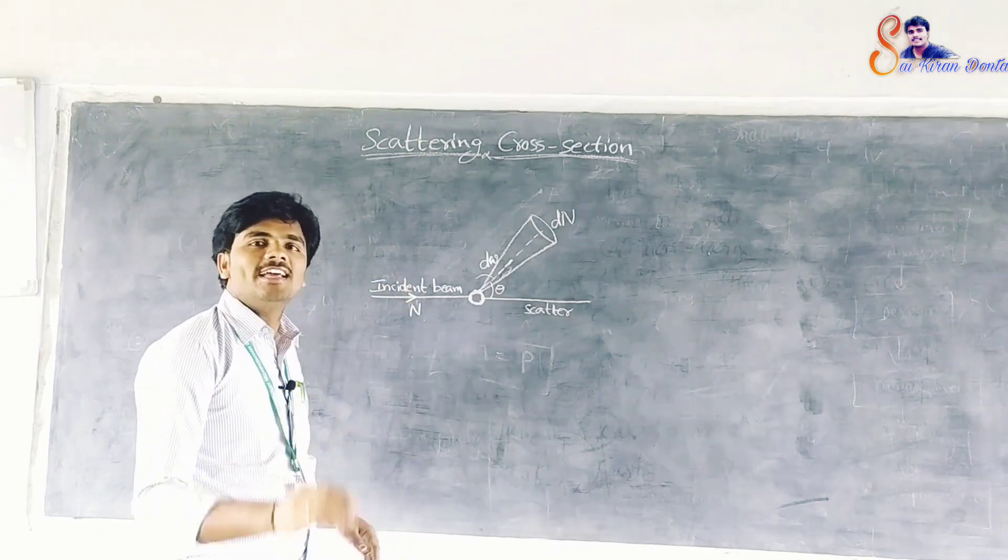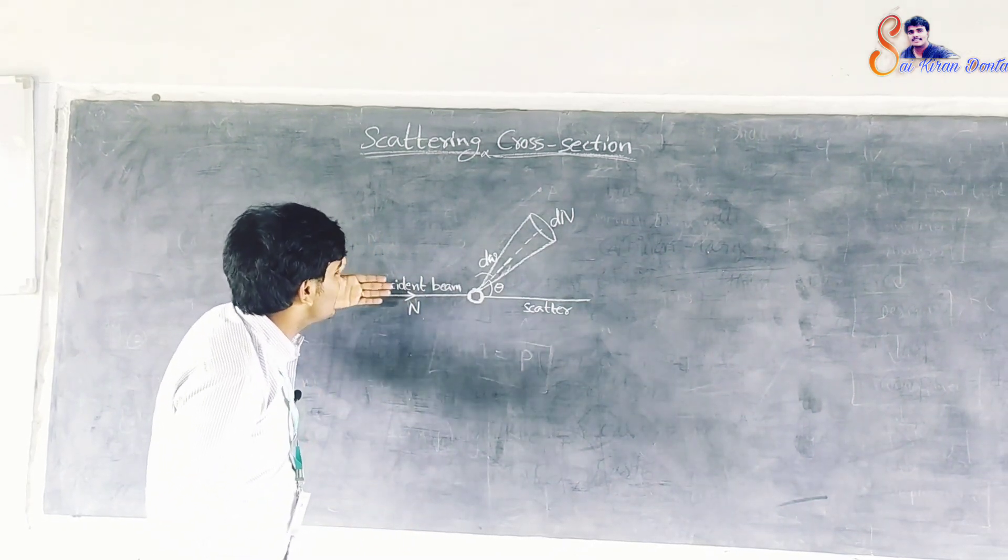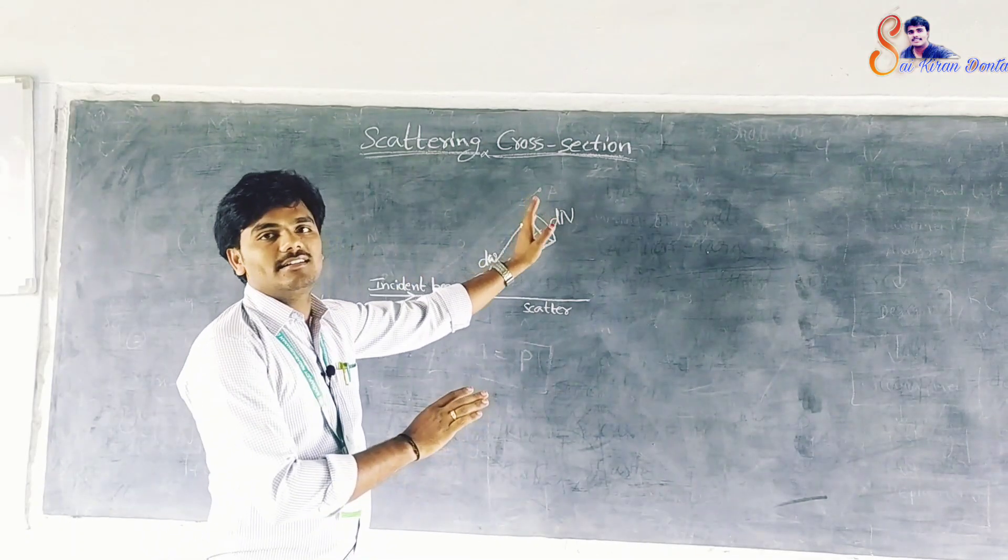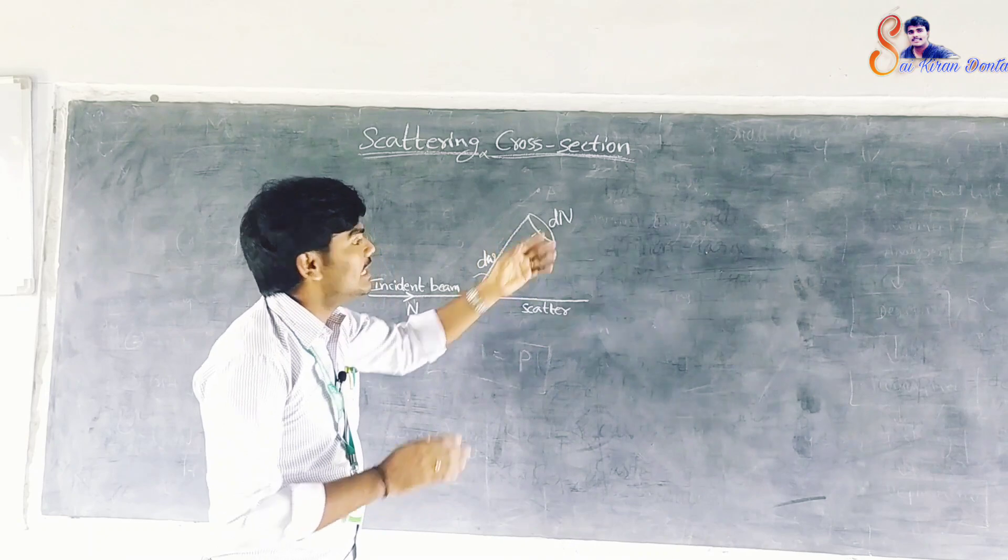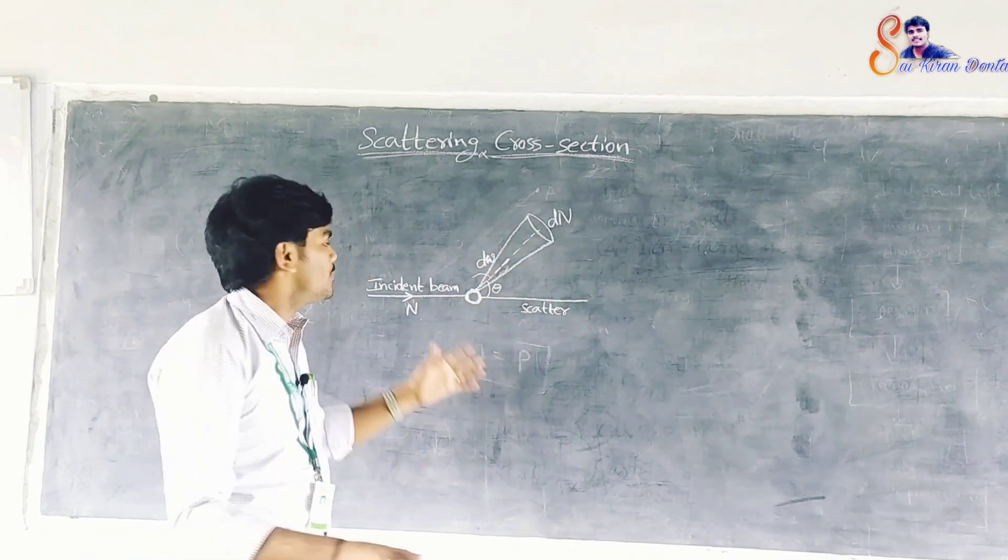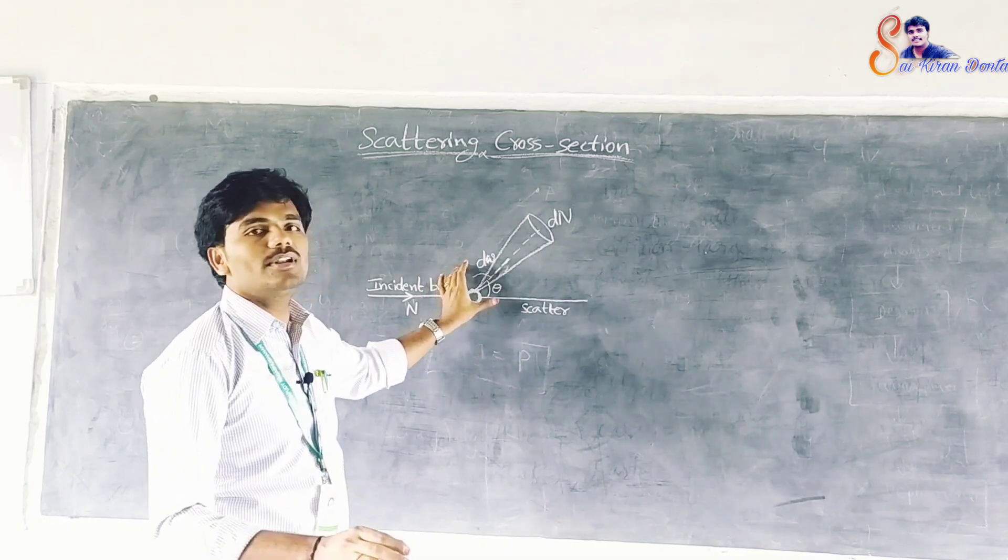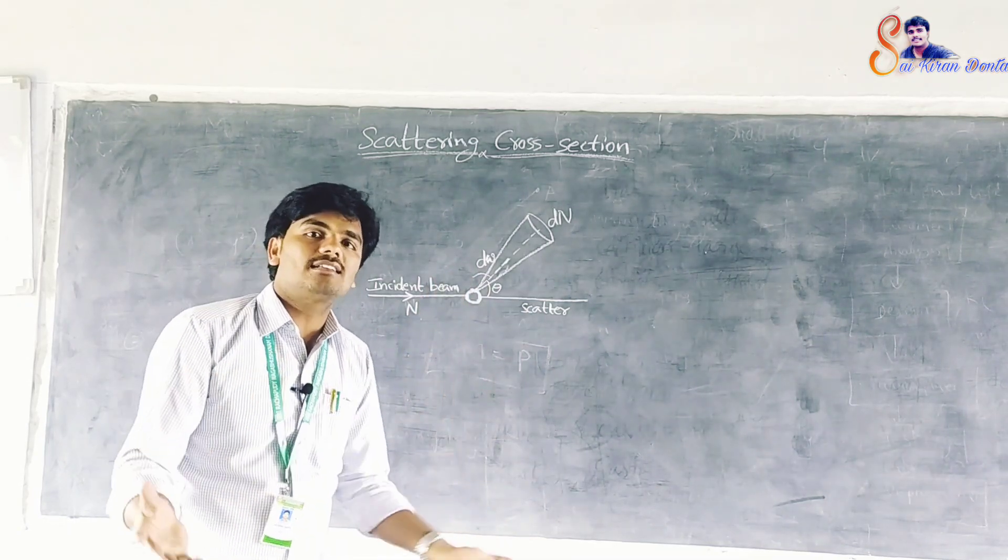Scattering cross section. When alpha particles are projected into a thin metal foil, they are deflected or scattered in different directions. Eipida ithe alpha particles ni manam. Oka metal foil me the project ches thaamo. A vannhi kuda deflect avothai. Leda scatter avothai.